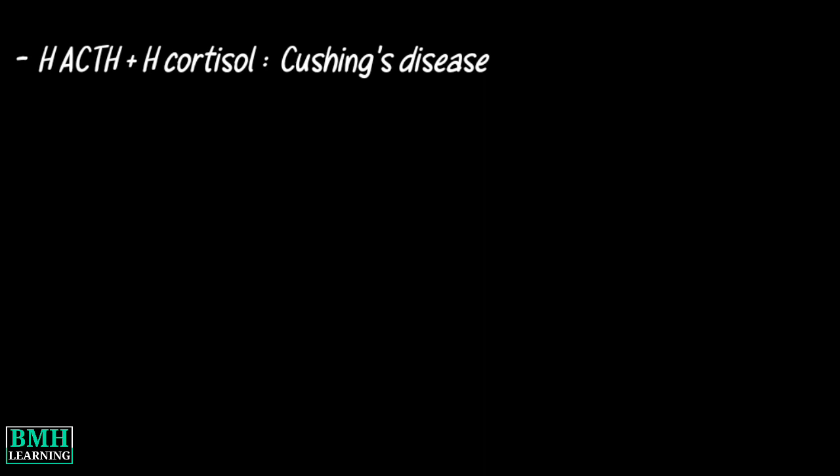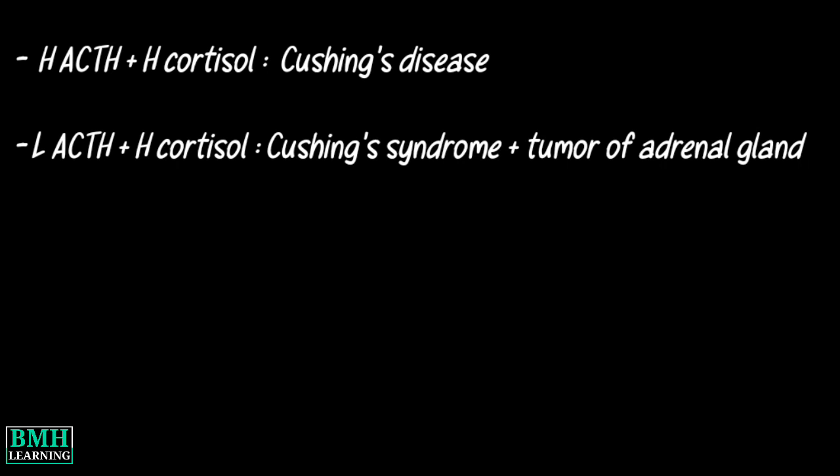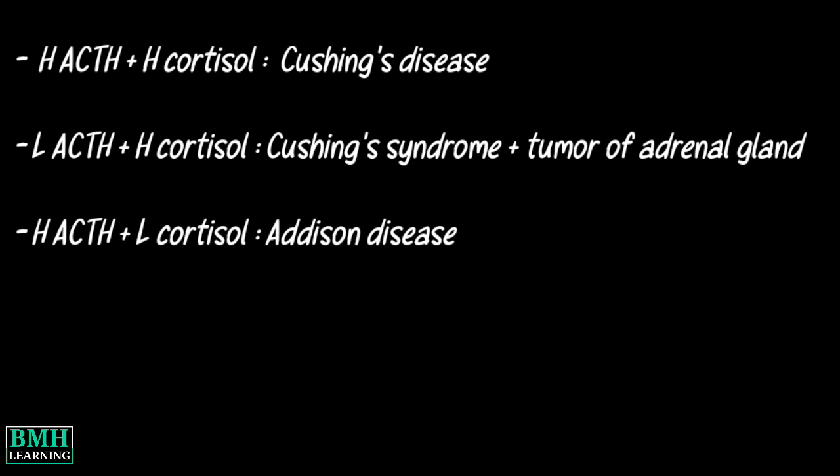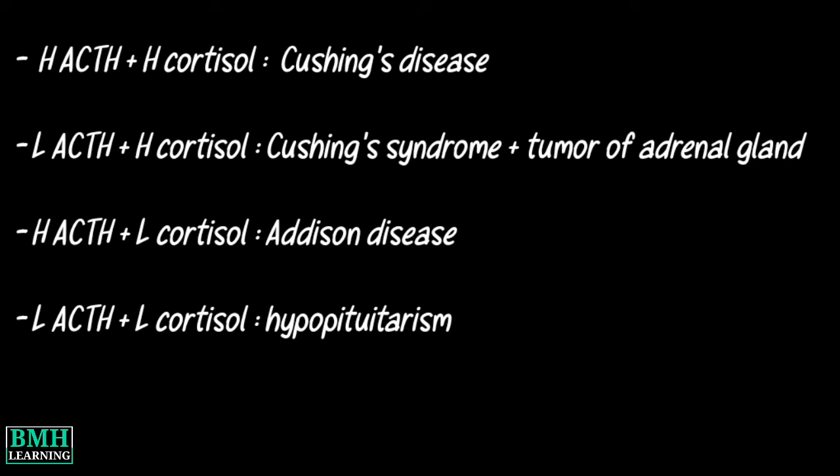High ACTH and high cortisol levels may mean Cushing's disease. Low ACTH and high cortisol levels may mean Cushing's syndrome or a tumor of the adrenal gland. High ACTH and low cortisol levels may mean Addison's disease. Low ACTH and low cortisol levels may mean hypopituitarism.